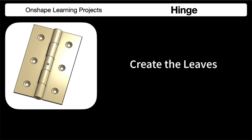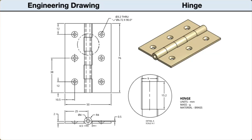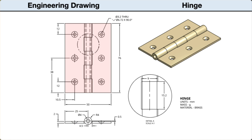In this segment we will create the leaves of the hinge. Let's start by examining the drawings. This drawing shows views of both leaves of the hinge assembled together. There is an isometric drawing to help us visualize the part in three dimensions. There are two orthographic views — in the lower left, a front view, and aligned above the front view is a top view.